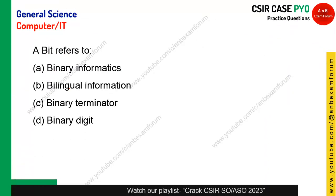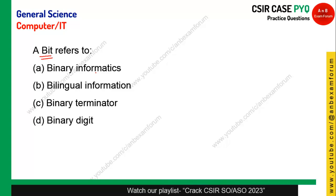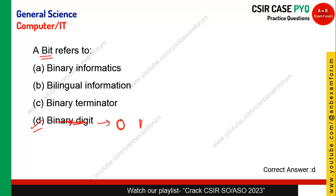In computers, there is a terminology called 'bit.' What is a bit? The options include binary informatics, bilingual information, bilingual terminator, and binary digit. It is 'binary digit' — 'bi' from binary and 't' from digit. Binary digit means it can have only two options: either 0 or 1. In short, it is known as a bit. Option D is the right answer.